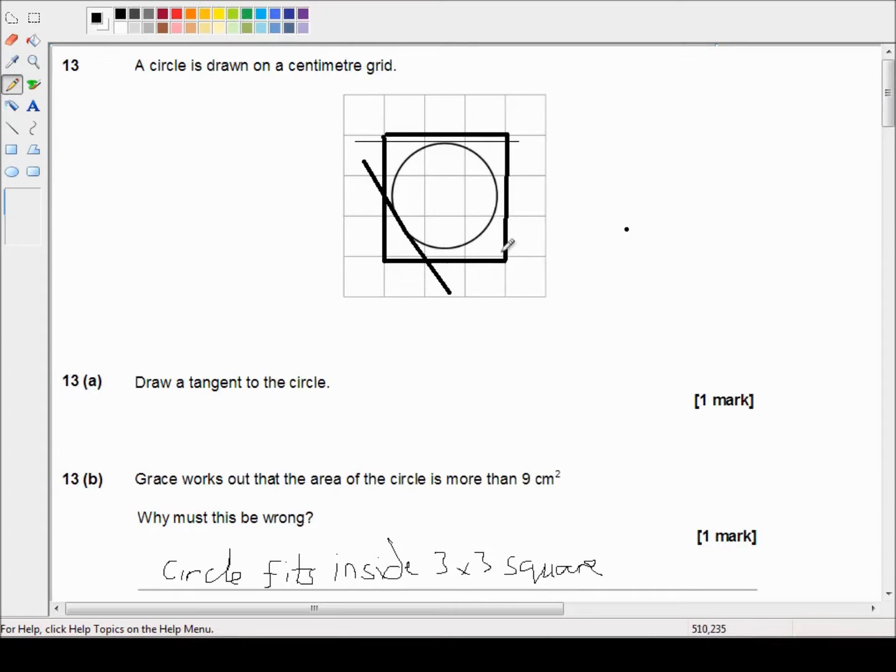But that's a lot of hard work for one lousy mark when it's easy just to say, obviously it's less than nine square centimeters because each one of these little squares is a square centimeter. You can draw a square around those nine square centimeters, and you can see that the circle fits very nicely inside that square. So obviously the area of this circle must be less than nine centimeters squared.